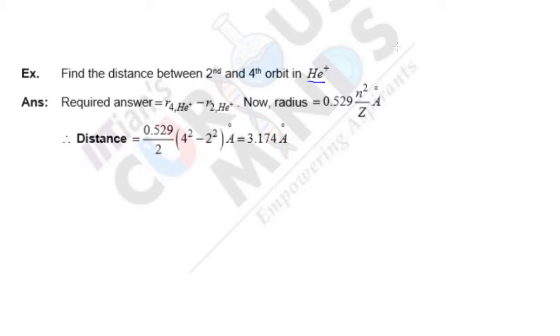So helium plus is given. Helium, you know, has 2 electrons and 2 protons. But since it is He+, it has only 1 electron removed. So since the number of electrons is 1, you can apply Bohr's concept, because Bohr's theory is only applied to single electron species.